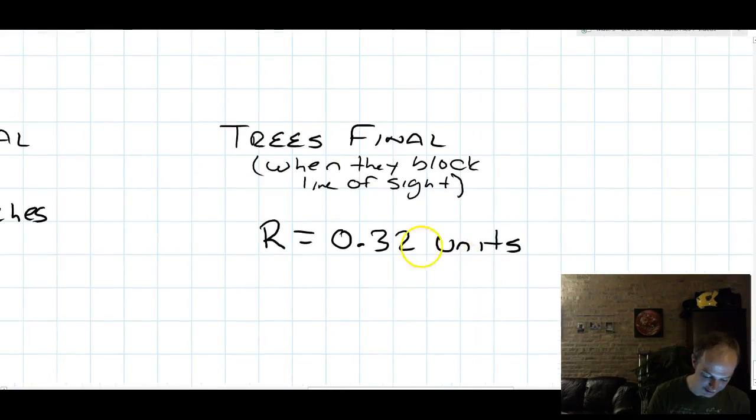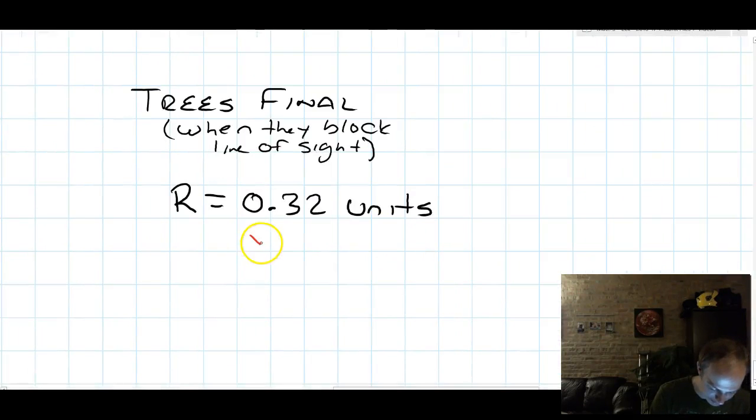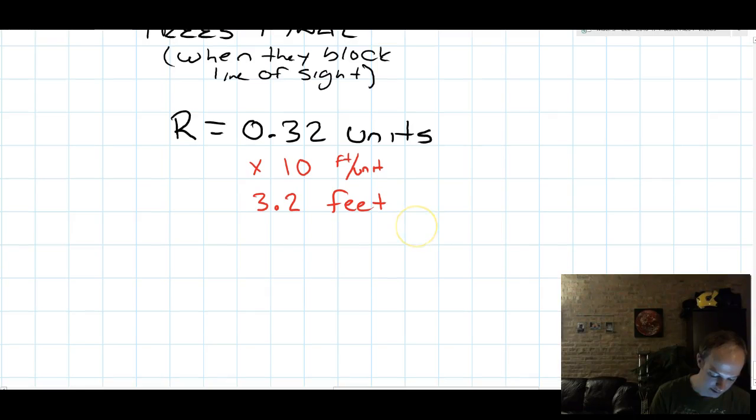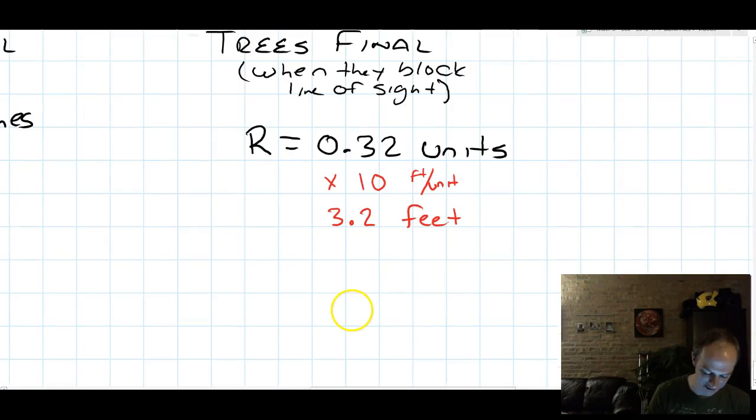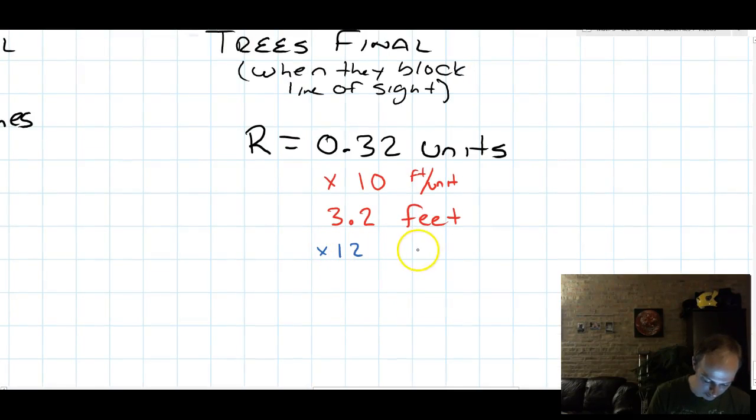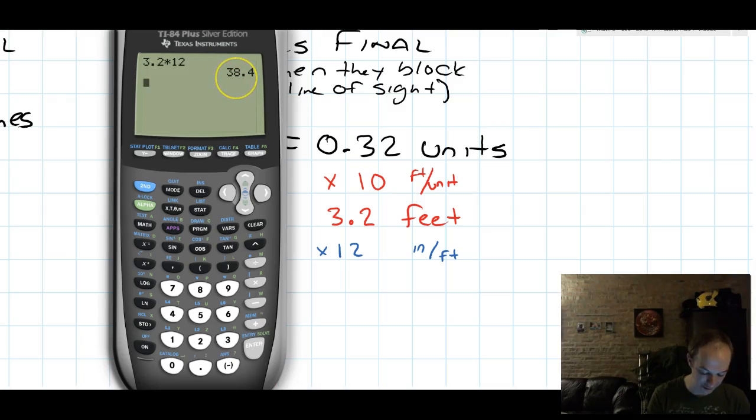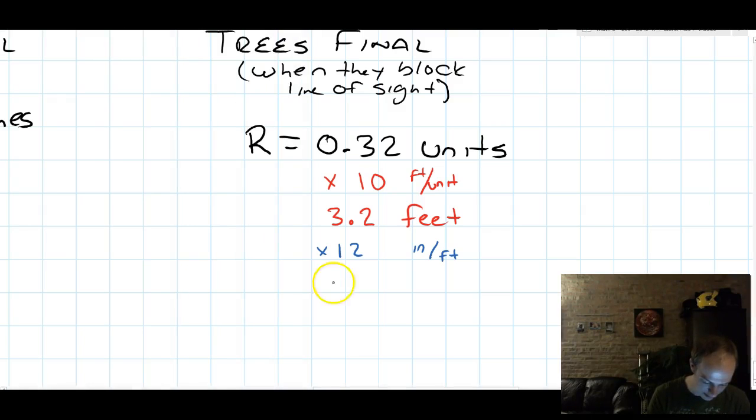So if I know that the tree is 0.32 units, I could do 0.32 times 10 to get 3.2 feet. This is 10 feet per unit. And then I'm not really done. I want inches. I've got feet. I can do 3.2 times 12 inches per foot to get the final answer, which is that the trees will have a radius of 38.4 inches.